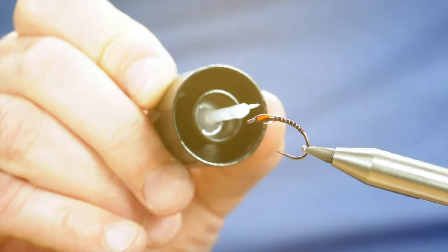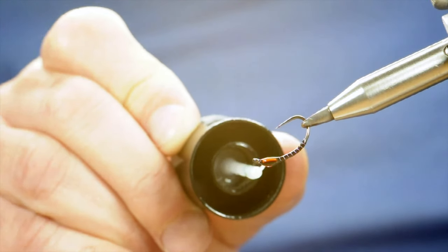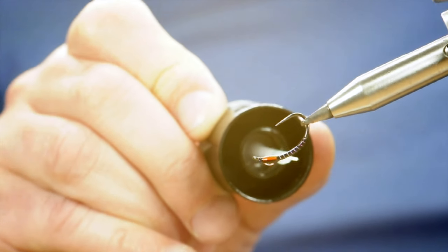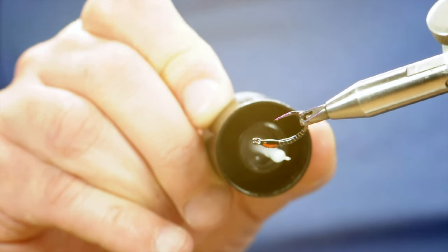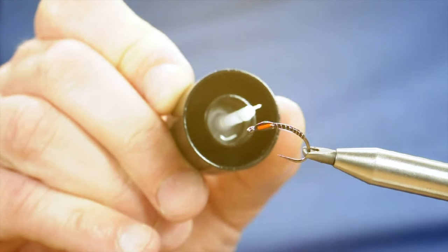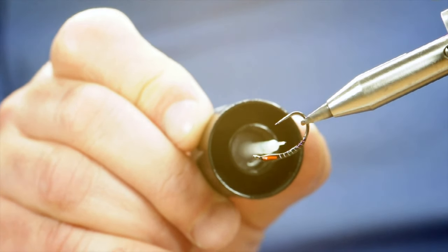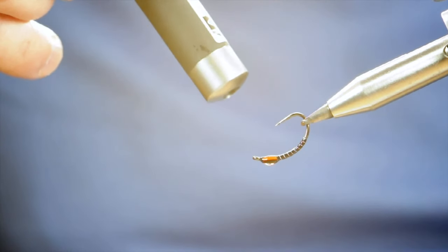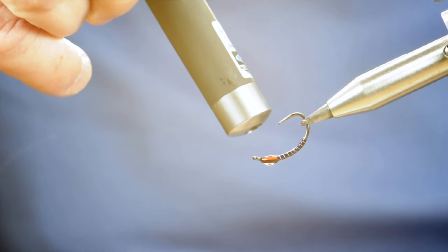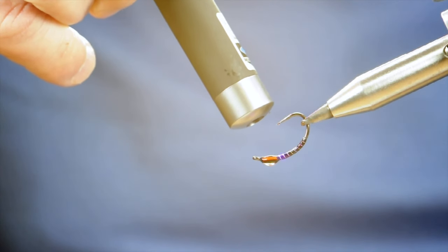Before I came across the Solaris, I used to use Troutlines UV resin and it was very good, but it didn't come with this handy brush. And that's probably the only reason I use this now. I just find the brush really handy. Try and get it nice and even. And then come in with a UV pen or torch and just cure it. Takes a little time.